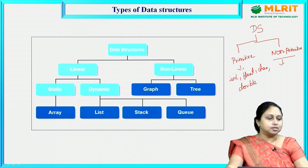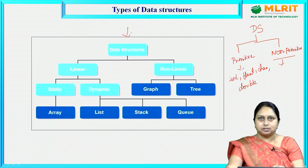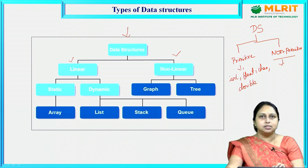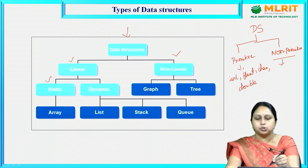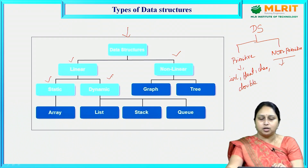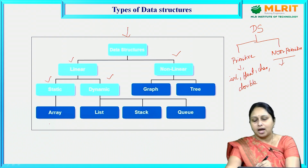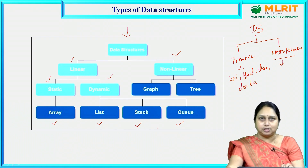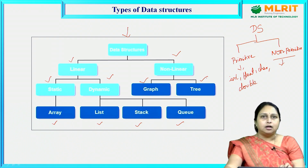Under non-primitive data structures, it is further classified into two types: linear and non-linear data structures. Linear data structures are again classified into two types: static and dynamic. Under static we have arrays, and under dynamic we have lists, stacks, and queues. Coming to non-linear data structures, we have graphs and trees.